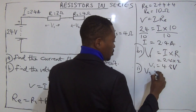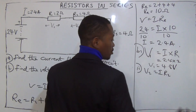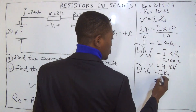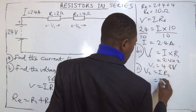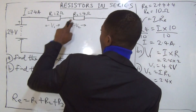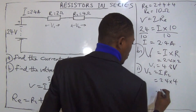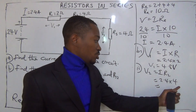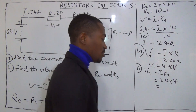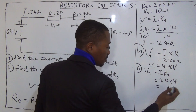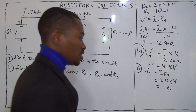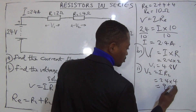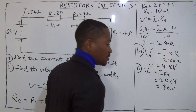I am looking for V2. V2 equals I multiplied by R2. The current I is 2.4, and R2 is 4. So 2.4 multiplied by 4 gives 9.6 volts. That is the voltage across R2.